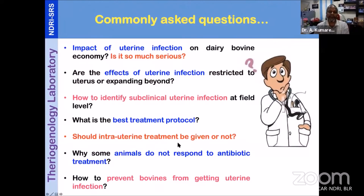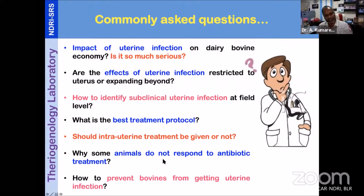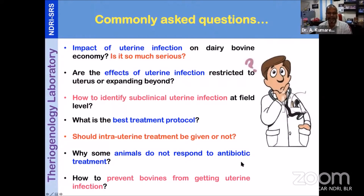Should intrauterine treatment be given or not? It is a highly debatable issue, but there is now consensus that during a particular postpartum window — especially within 10 to 14 days after calving — it is better not to go for intrauterine treatment but to go systemic; otherwise, after that, intrauterine treatment is a matter of choice. Why some animals do not respond is also a big question. Ultimately, as veterinarians, we don't concentrate much on prevention, but now it is time, because dairy is shifting from smallholder to semi-commercial and commercial where hundreds of thousands of animals are managed. Prevention is better than cure, and there are some methods.